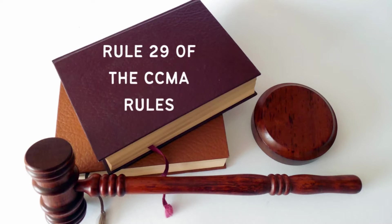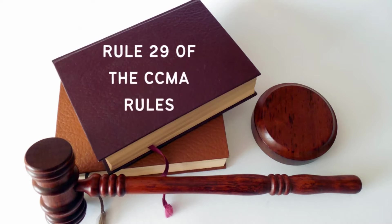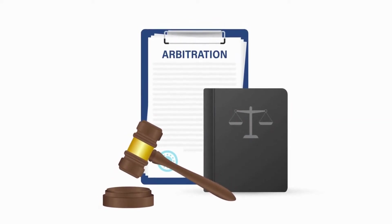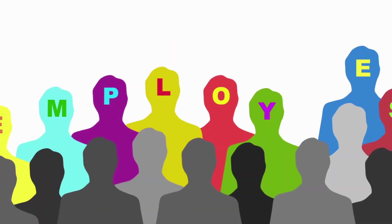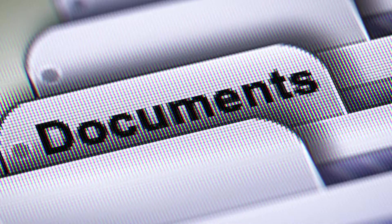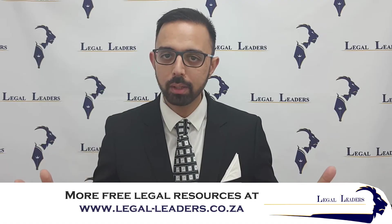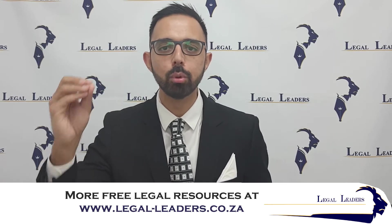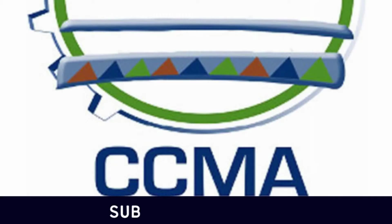What does Rule 29 say? Rule 29.1 states that at any time after the request for arbitration, but not less than 14 days prior to the hearing date, either party — that means the company or the employee — may request the other party to disclose any documents or material relevant to the dispute. In other words, you have 14 days before the arbitration to make a request in terms of Rule 29 for any documents you need for your CCMA case.